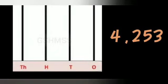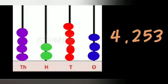In the abacus chart, four in the thousands place so I draw four lavender color beads, two in the hundreds place so I draw two green color beads, five in the tens place so I draw five red color beads, three in the ones place so I draw three blue color beads.